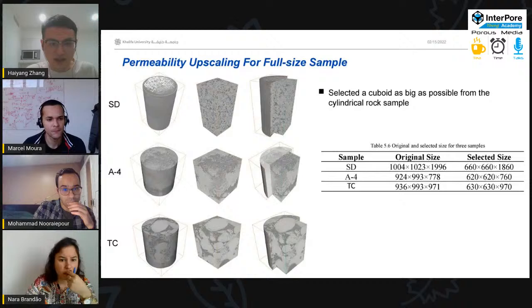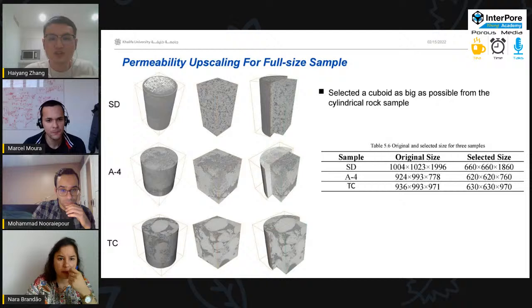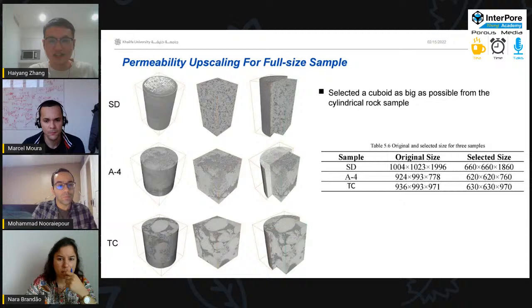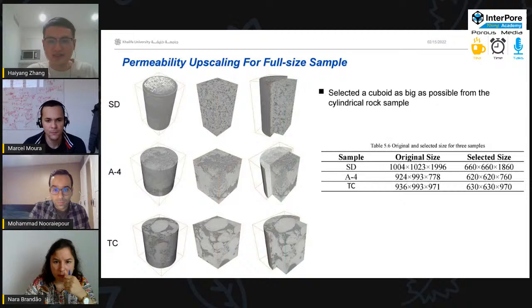And then this upscaling approach method was applied for the full-size sample. Because of the full-size sample, it is cylindrical. This kind of shape cannot be used for calculation. So, we select a cuboid as big as possible from the original samples. This table shows the original size and the selected size.